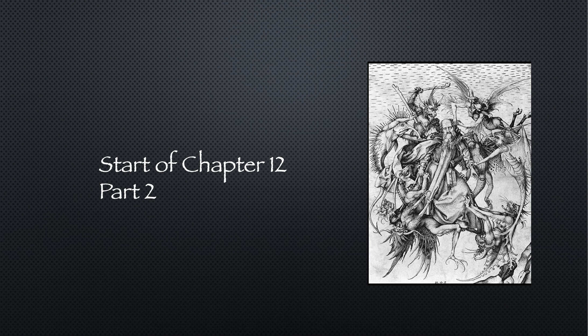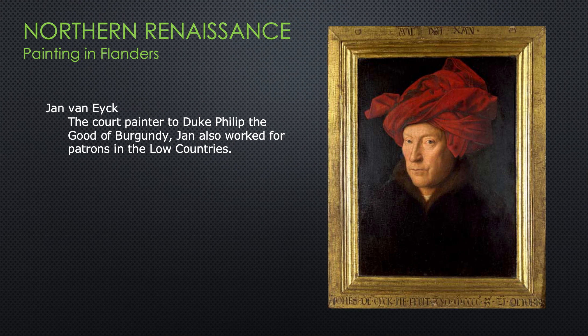We're still in the north of Europe and we're still going to be looking at some first generation panel painters. Our next panel painter is very significant, and you do need to know his name. This is Jan van Eyck. This portrait on the right is thought to be a self-portrait of Jan van Eyck. He was the court painter to Duke Philip the Good of Burgundy. Jan also worked for patrons in the Low Countries — the Netherlands and Belgium.